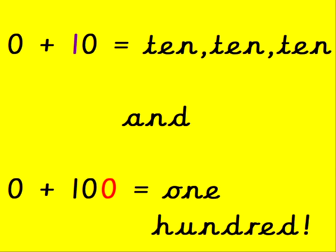0 add 10 makes 10, 10, 10, and 0 add 100 is 100.